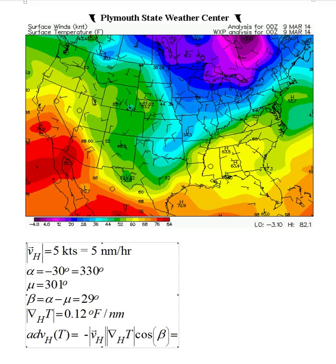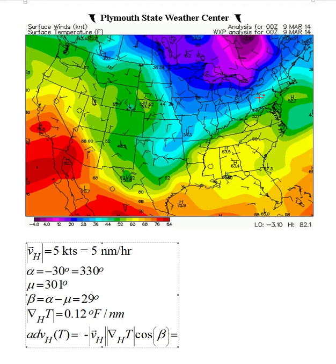Temperature advection is just a dot product of the velocity vector and the temperature gradient vector at that point. Let's choose this point in Pennsylvania, where we've already calculated the gradient for this point. Let's look at the wind vector. The station weather plot has a wind bar that's northwesterly and five knots.